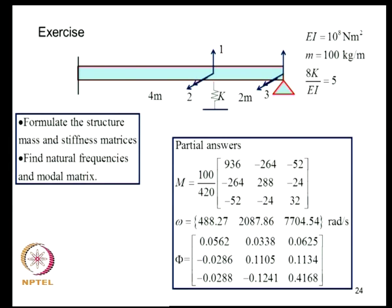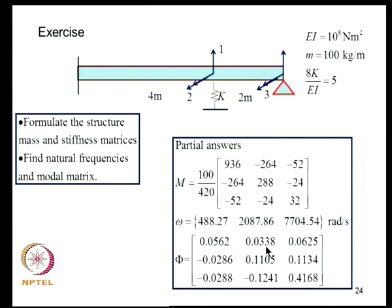An exercise problem presents a propped cantilever beam additionally supported through a spring, approximated as a 3-degree-of-freedom model with degrees of freedom 2,1 and 2,2 and 2,3. The mass matrix is given along with partial answers: the three natural frequencies and the modal matrix. Students are asked to verify these results.